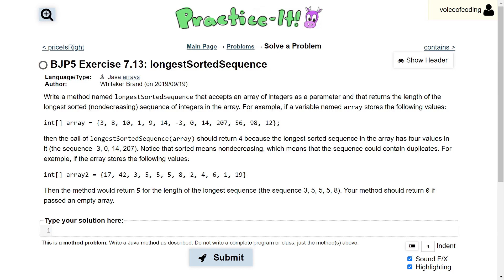The problem reads: write a method named Longest Sorted Sequence that accepts an array of integers as a parameter and returns the length of the longest sorted, non-decreasing sequence of integers in the array. For example, if a variable named array stores the following values: 3, 8, 10, 1, 9, 14, negative 3, 0, 14, 207, 56, 98, and 12,